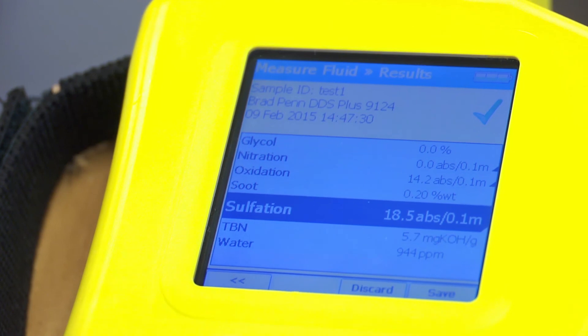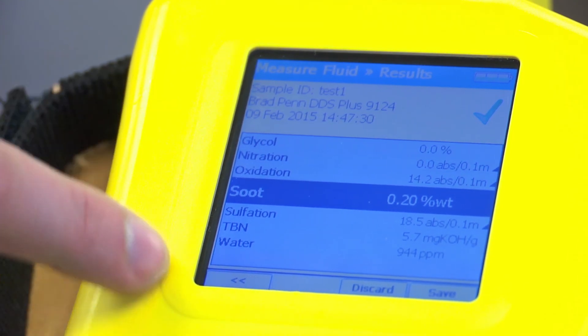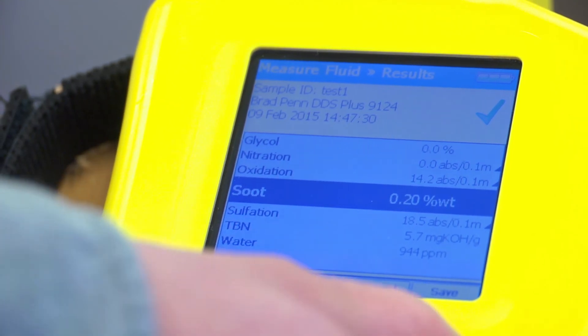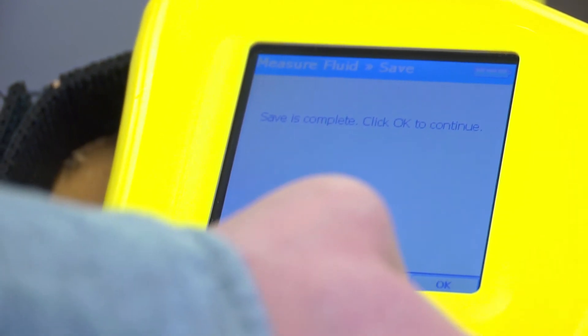This is important to note because for other industries such as hydraulic oils, soot would not be a present parameter because it is never really of concern. Looking at this, you can then save the data and hit save. Once the save is complete, you have completed one test. It is quick, easy, and takes under five minutes.